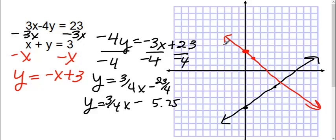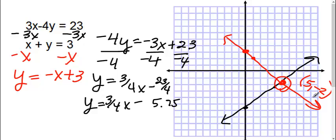And where they cross is where my solution is. So if we count over 1, 2, 3, 4, 5 — it crosses at x equals 5. Negative 2 is where they intersect on the y-axis. So my answer is the point (5, negative 2).